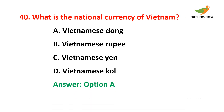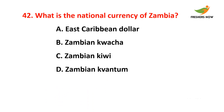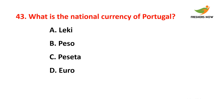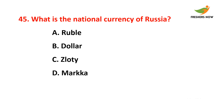Fortieth question: What is the national currency of Vietnam? The answer is option A — Vietnamese dong. Forty-first question: What is the national currency of Yemen? The answer is option C — Yemeni rial. Forty-second question: What is the national currency of Zambia? The answer is option B — Zambian kwacha. Forty-third question: What is the national currency of Portugal? The answer is option D — euro.